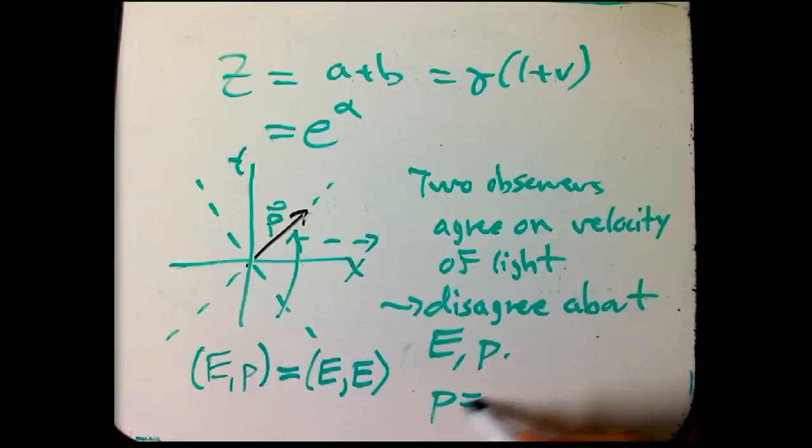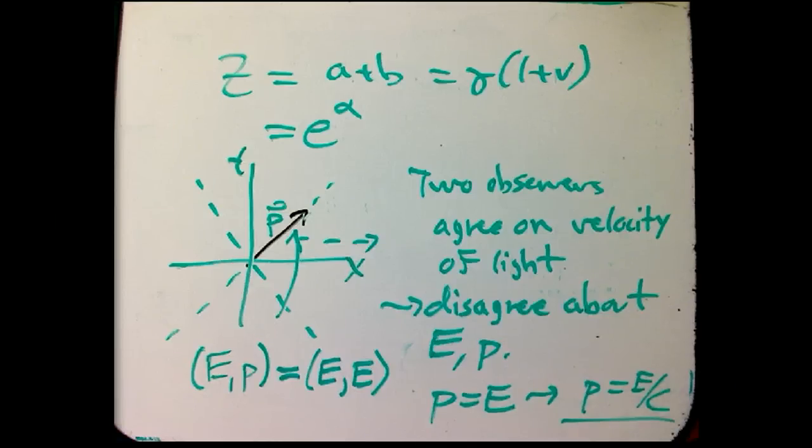So in other words, for a photon, P equals E, if you want to put the C's in, it's not too hard to see that it's going to be E over C to get the units right, but as usual, for me, C equals 1. Okay,